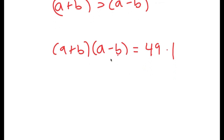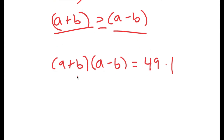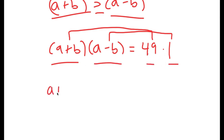Because a plus b is greater than a minus b, we can say that a plus b is equal to 49 and a minus b is equal to 1, because 1 is less than 49. And notice how this is equal to a number times another number, so a plus b is equal to 49 and a minus b is equal to 1.